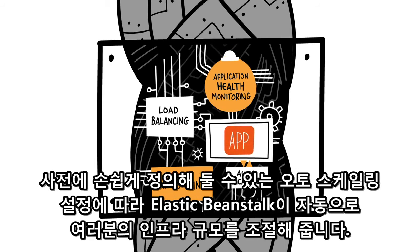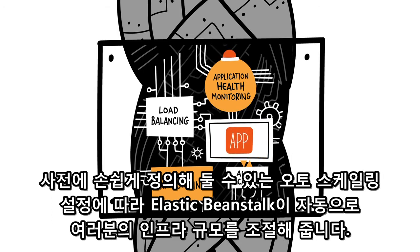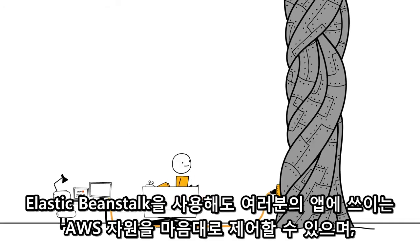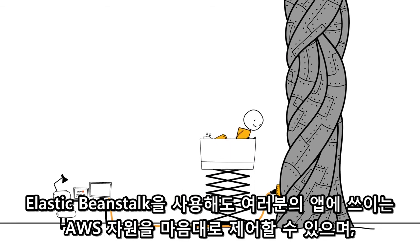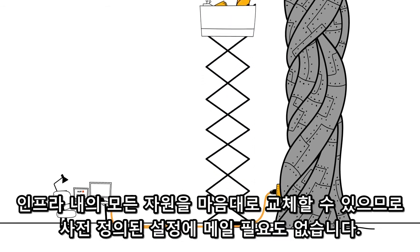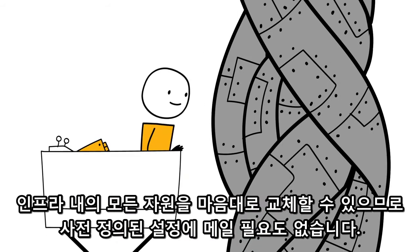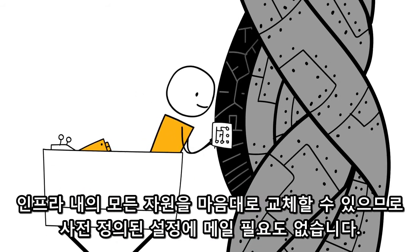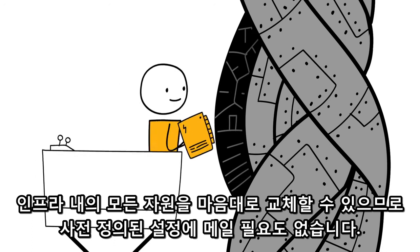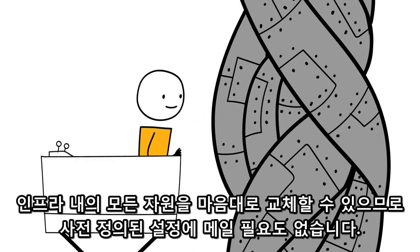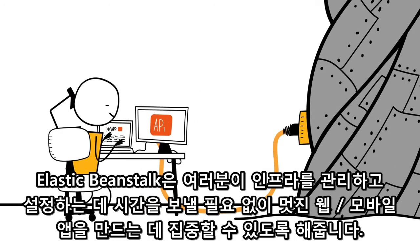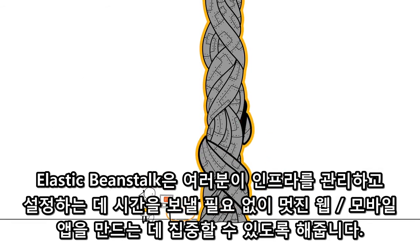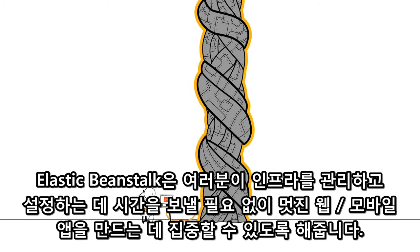Elastic Beanstalk will automatically scale your application up and down based on easily adjustable auto-scaling settings. You also retain full control over all the AWS resources powering your app. You can take over some or all of the resources of your infrastructure anytime, so you're not forced to live with predetermined configurations.